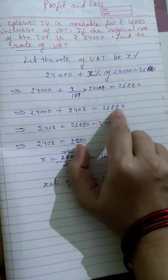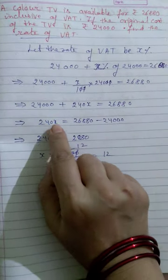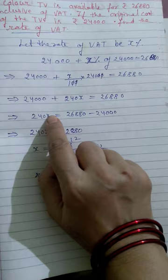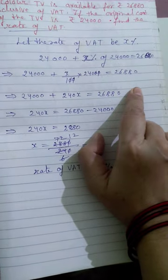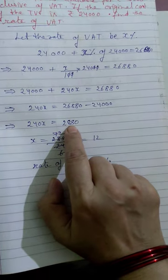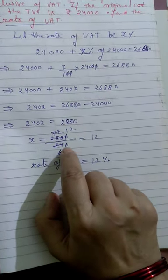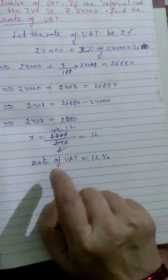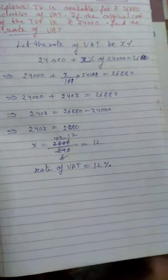And here we have 26,880. Now we'll transpose 240x to the right-hand side, so it becomes minus. 24,000 minus 240x equals 26,880 minus 24,000, which gives 2,880. So x equals 2,880 divided by 240, which equals 12. Therefore, the rate of VAT is 12 percent.